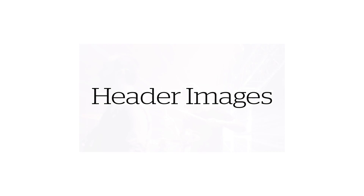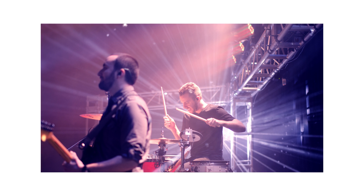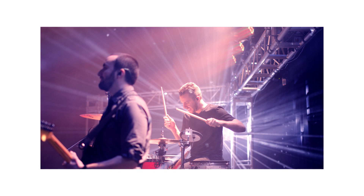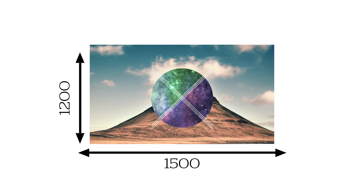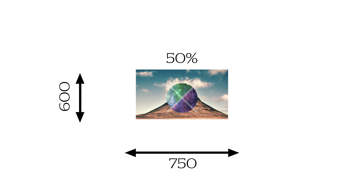Now, let's take a look at the header image. Since headers are responsive, the size of the image will be scaled to fit the size of the screen it's viewed on. So if you upload an image that's 1500 pixels wide by 1200 pixels in height, when viewed on a screen half the size of the picture, the image will appear as if it were 750 pixels wide by 600 pixels high.